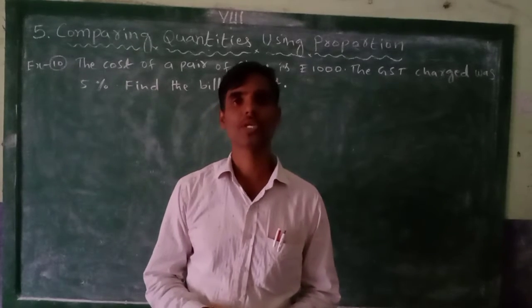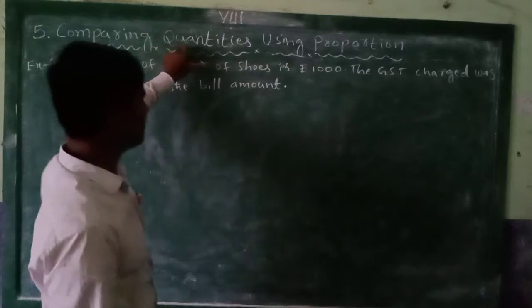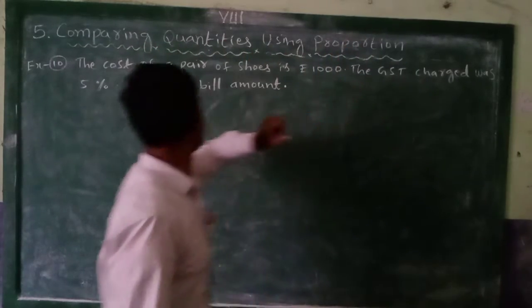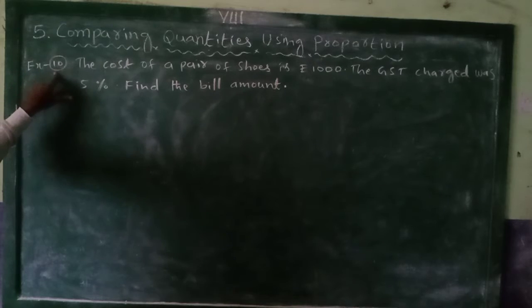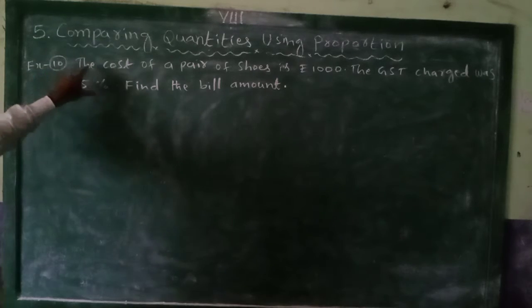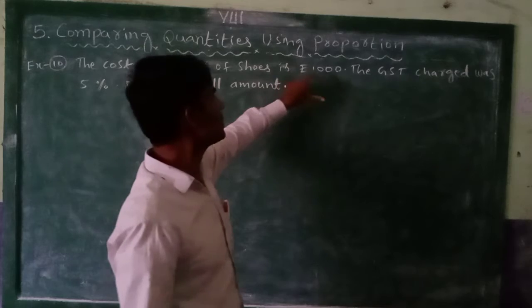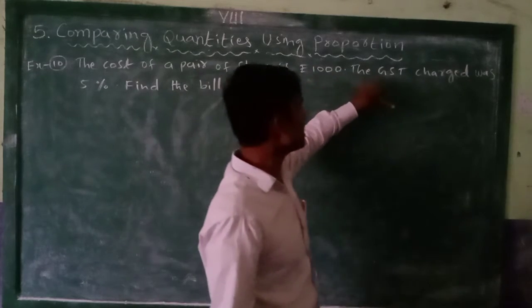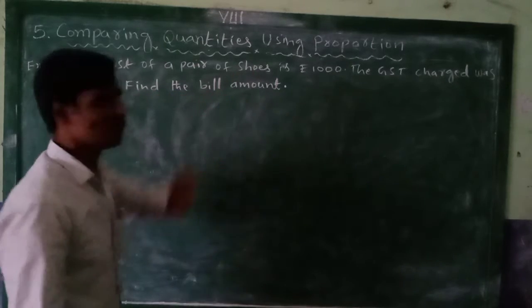Now we are discussing 8th class, 5th chapter, Comparing Quantities using Proportion. In example 10, in previous classes we discussed examples 1 to 9. Now example 10, the cost of a pair of shoes is Rs.1000. The GST charged was 5%. Find the bill amount.